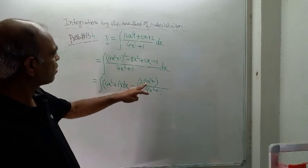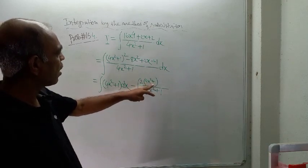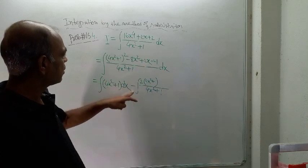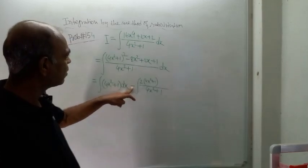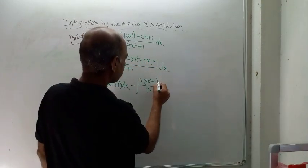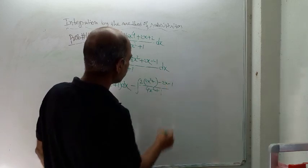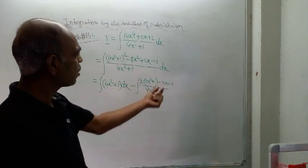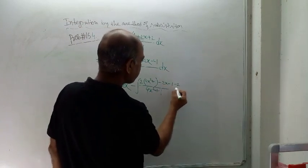So 2 into 4 is 8, giving 8x² + 2, which I have written here. And with the minus sign applied, here minus 2x minus 1 will appear. Then this plus 2 term is there, so you have to adjust this term, and here again minus 2 appears.